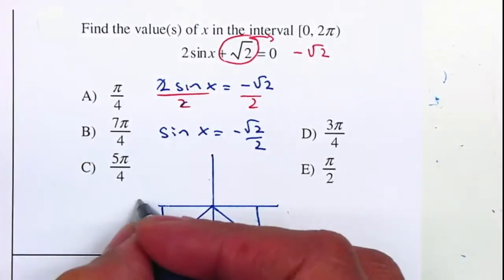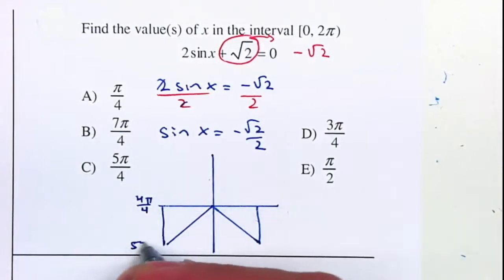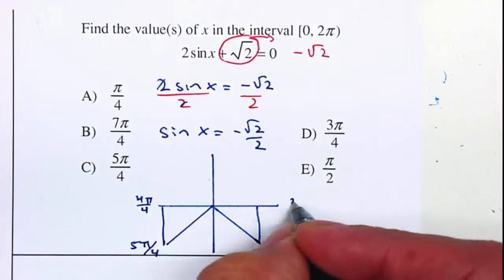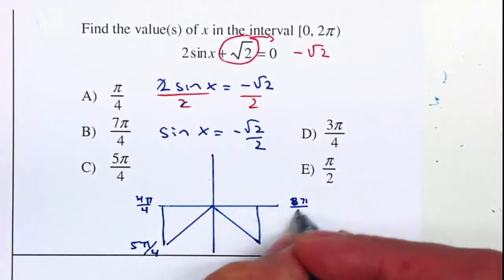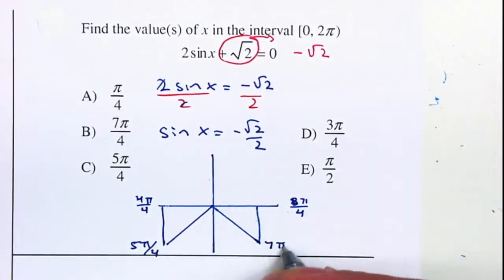So therefore, this is π, which is 4 fourths. So therefore, this will be 5π over 4. This is 2π, which is 8 fourths. So therefore, this will be 7π over 4.